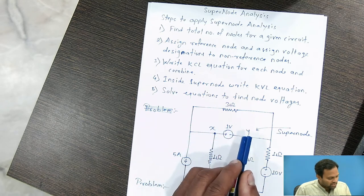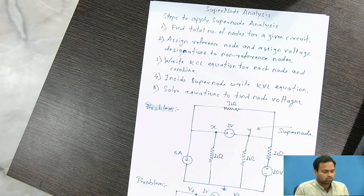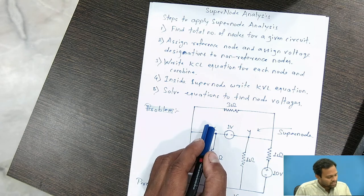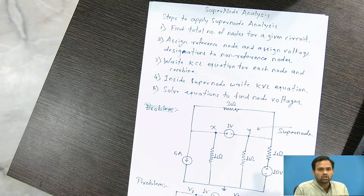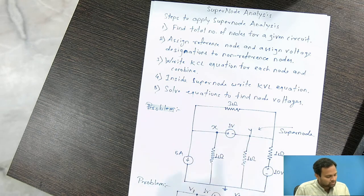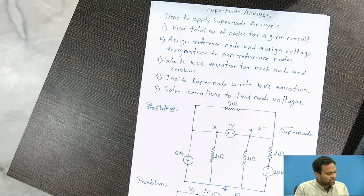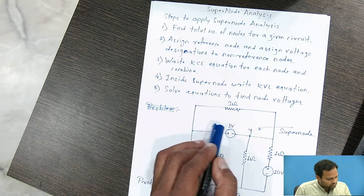Between node X and node Y there is a voltage of 1 volt, so this portion of the circuit is called a super node. What we have to do is write separate KCL equations at node X and node Y, combine those two equations, and then apply KVL to this portion — that is, node X, the 1 volt voltage source, and node Y. Then we solve to find the unknown values of voltage Vx and Vy.